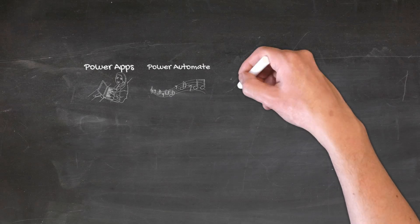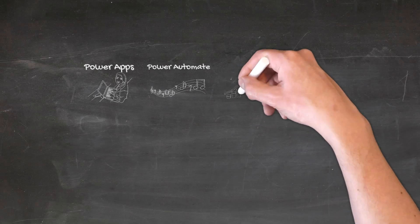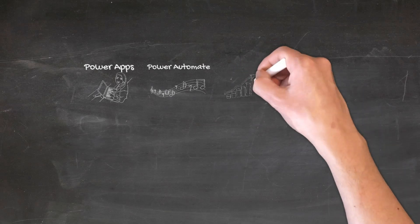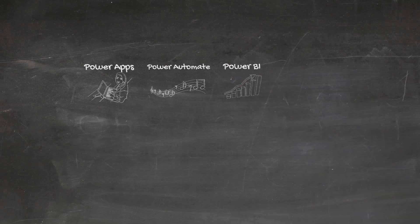The next component is Power BI. Power BI allows you to take the raw data that we collect in an organization, turn it into beautiful visuals that we can get insights out of, and take proactive actions, as well as use natural language queries to poke at the data to get answers to our important questions.